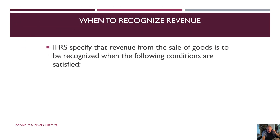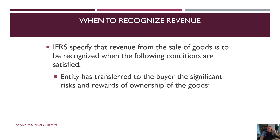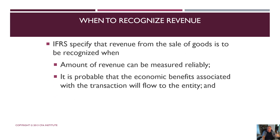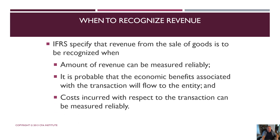Under IFRS, it's a little bit different. The entity has transferred ownership, ownership being defined as the risk and rewards of ownership of the goods. The entity retains no involvement or effective control over the goods sold. The amount of revenue can be measured reliably. It is probable that the economic benefits will flow to the entity. And the costs associated with the transaction can be measured reliably. Under IFRS, we tend to recognize income a little later than you might under U.S. GAAP.